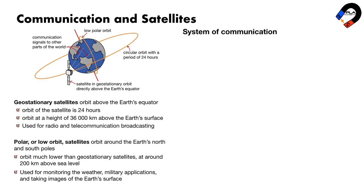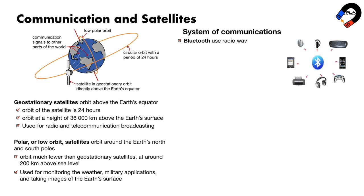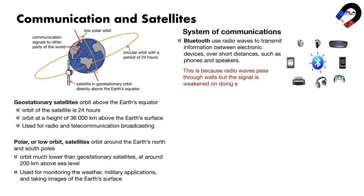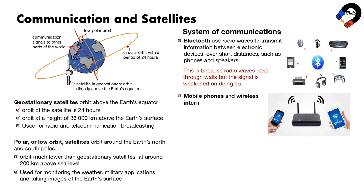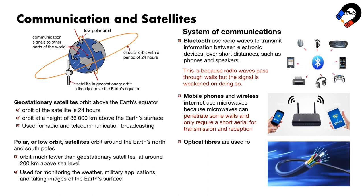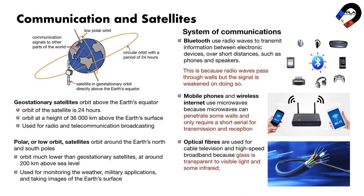Systems of communications rely on long-wavelength electromagnetic radiation. Bluetooth uses radio waves to transmit information between electronic devices over short distances, such as phones and speakers, because radio waves pass through walls, though the signal is weakened. Mobile phones and wireless internet use microwaves, which can penetrate some walls and only require a short aerial for transmission and reception. Optical fibers are used for cable television and high-speed broadband, because glass is transparent to visible light and some infrared, and these can carry high rates of data.